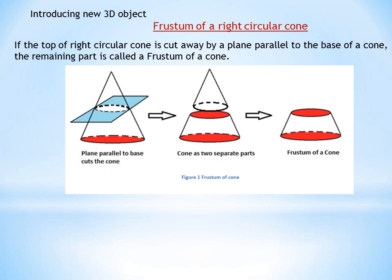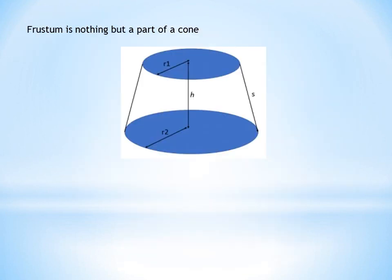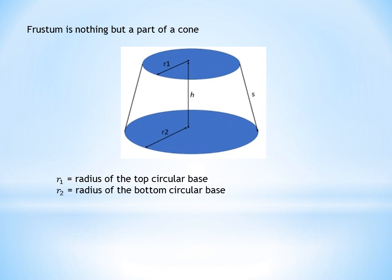Do remember: the two circular faces of a frustum should be parallel to one another. Examples of a frustum include a bucket, street cone, glass, and many more. A frustum is a part of a cone where R1 is the radius of the top circular base and R2 is the radius of the bottom circular base. R1 is always parallel to R2 because both circular faces are parallel to one another.